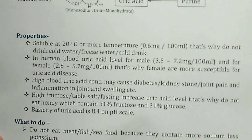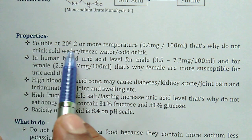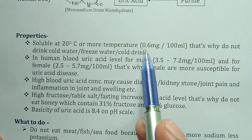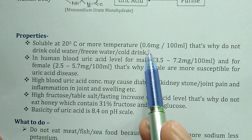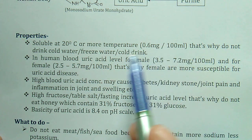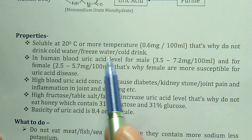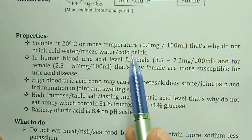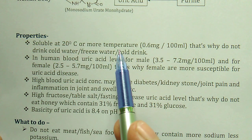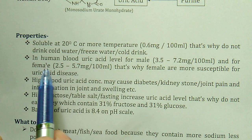Uric acid is soluble at 20 degrees Celsius or more. The solubility of uric acid is 0.6 milligram per 100 ml. That is why you should not drink cold water, freeze water, or cold drinks, because cold temperatures facilitate the deposition of uric acid in the body.